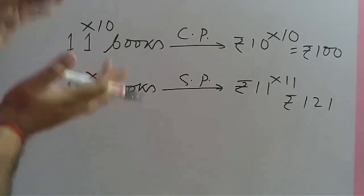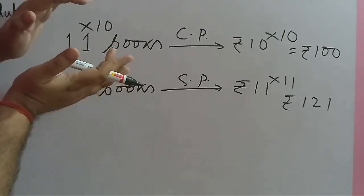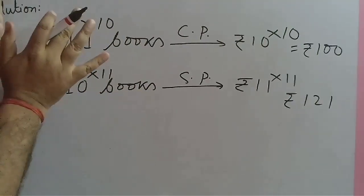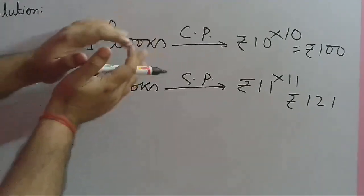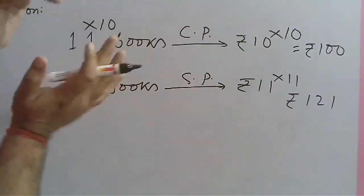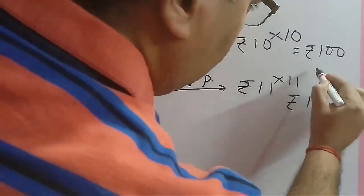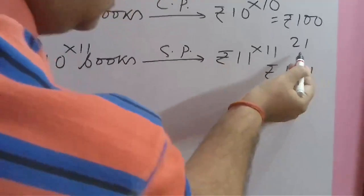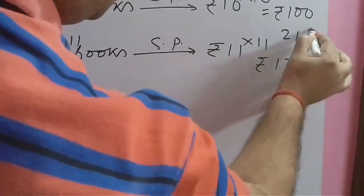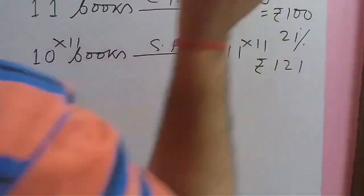Now we see that for the same 110 books, cost price is rupees 100 and selling price is rupees 121. So profit is 21. And since it is on rupees 100, profit percent is 21 percent.